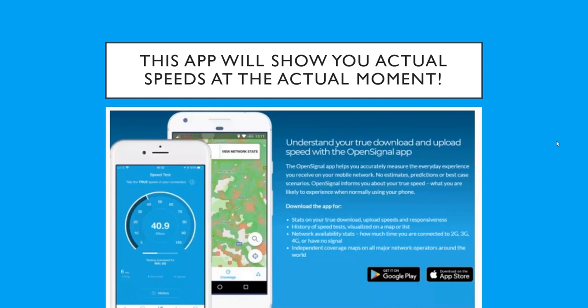Download the app for stats on your true download and upload speeds, responsiveness, history of speed tests visualized on a map or list, network availability stats showing how much time you are connected to 2G, 3G, 4G, or have no signal, and independent coverage maps on all major network operators around the world. It's available on Google Play and also on the App Store.